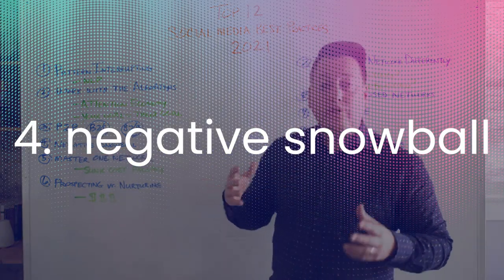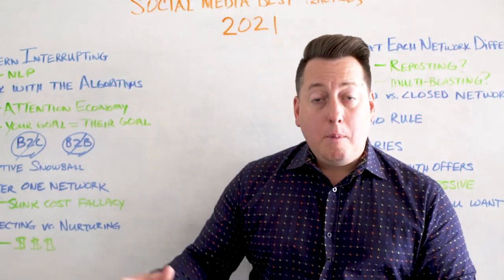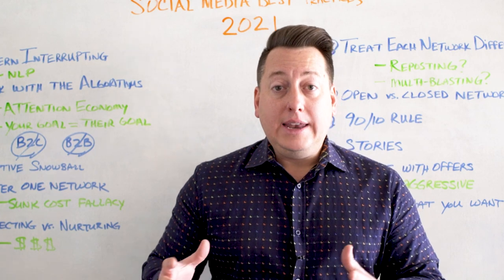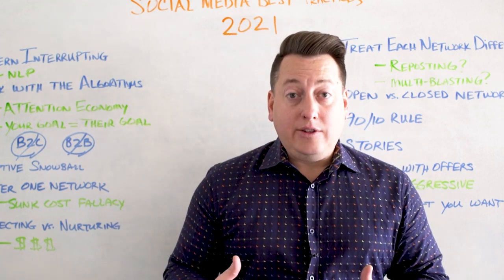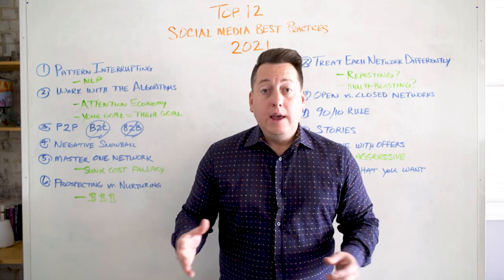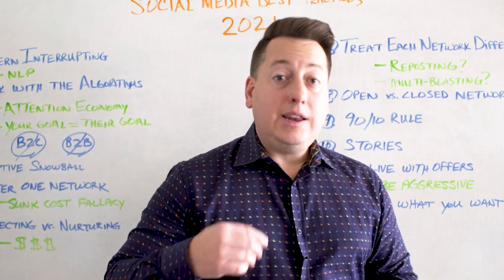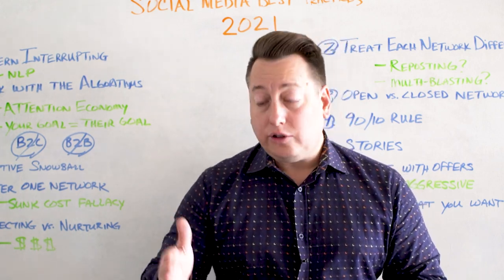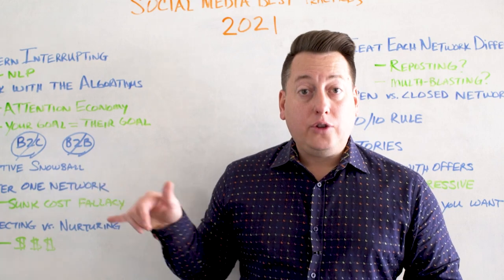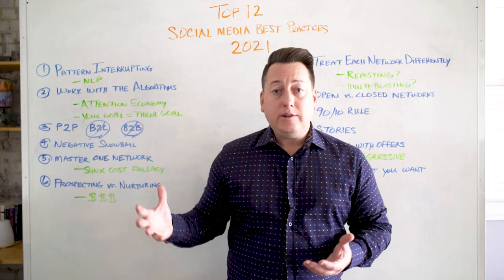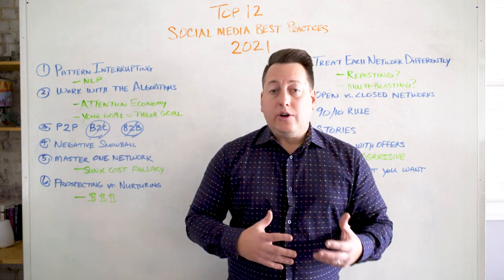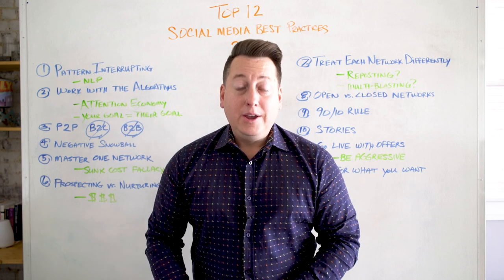Number four: the negative snowball. Just like a snowball rolling downhill gaining momentum and getting bigger, in social media you need to beware the negative snowball. The more content you put out that people aren't engaging with, the more difficult it's going to be to bounce back and get your content shown to everyone. If people aren't paying attention, the network will slowly show your content to fewer and fewer people. For example, Priceline's Facebook page has millions of likes but only gets around a hundred interactions per post — they've fallen victim to the negative snowball.